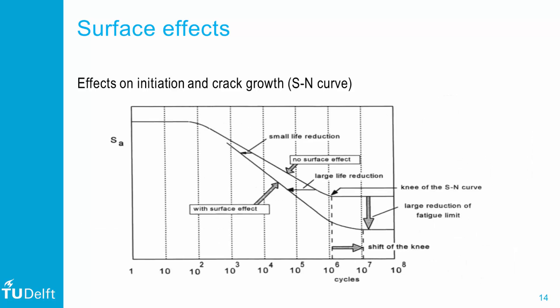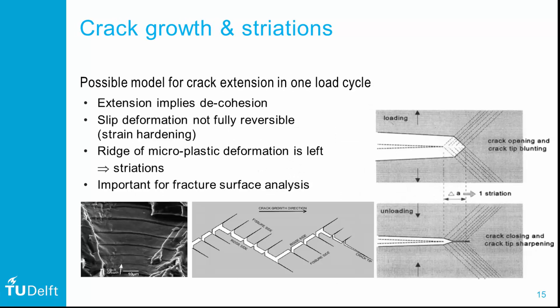This effect is also visible in SN curves. Comparing fatigue life curves for smooth and rough surfaces clearly shows differences near the fatigue limit. In particular, corrosion as an environmental aspect reveals this reduction in fatigue life near the fatigue limit, as will be discussed later in this course. During the crack growth phase, crack growth is determined by the bulk material and no longer by the surface conditions.